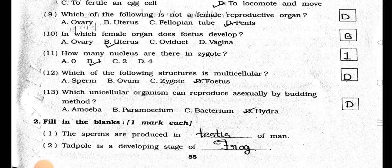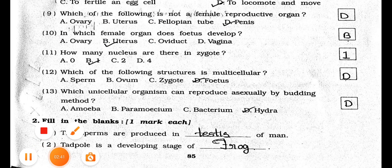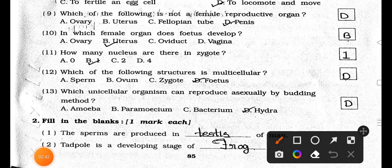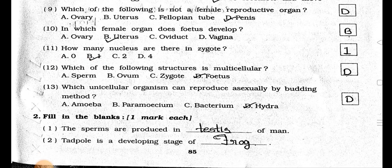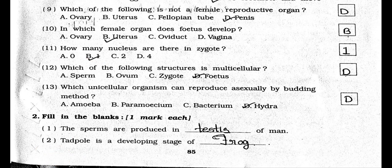Number 11. How many nuclei are there in a zygote? A. 0, B. 1, C. 2, and D. 4. Answer is Option B, 1.